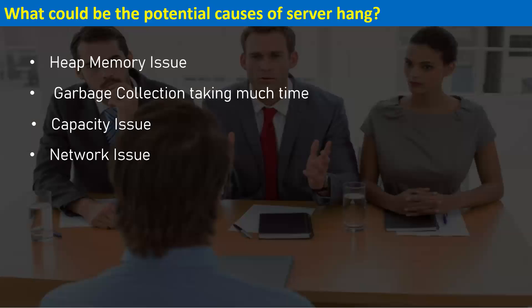There could also be network issues from any point in the request flow: from load balancer to web server, from web server to application server, and from application server to the backend database server. There could be a network glitch at any of these layers — between the load balancer and web server, or between the application server and database.